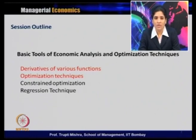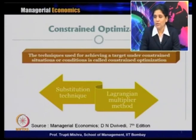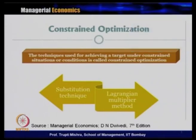Today we will discuss the optimization technique with a constraint, either in the form of income or cost. In the case of constrained optimization, this is a technique used for achieving a target under a constrained situation or condition. The motivation remains the same — achieving a target either to maximize profit or minimize cost — but here the difference is that there is a constraint along with the objective function.